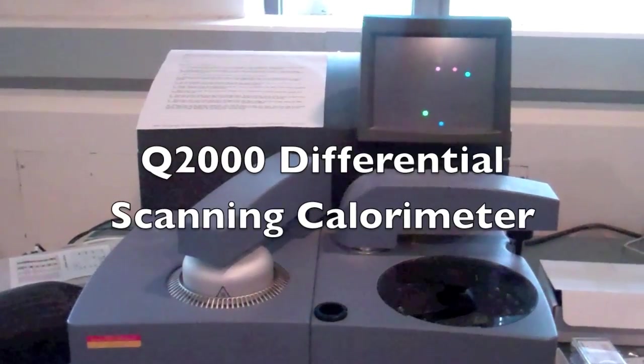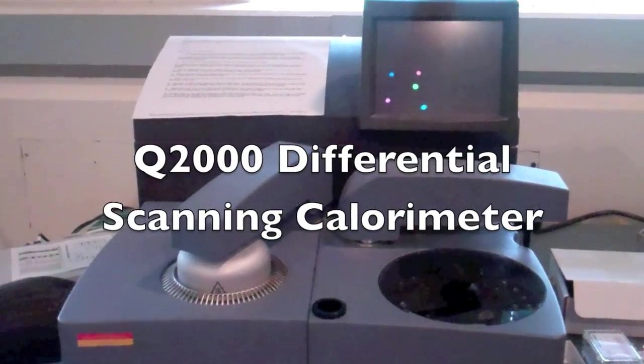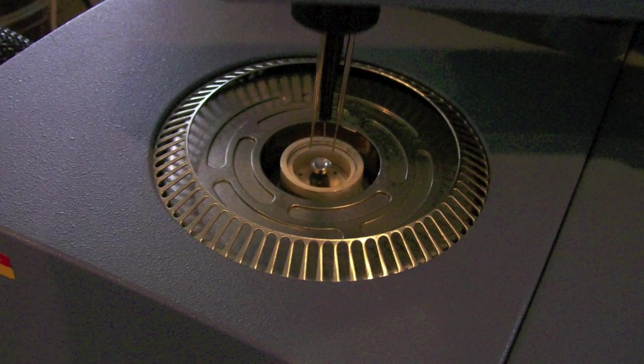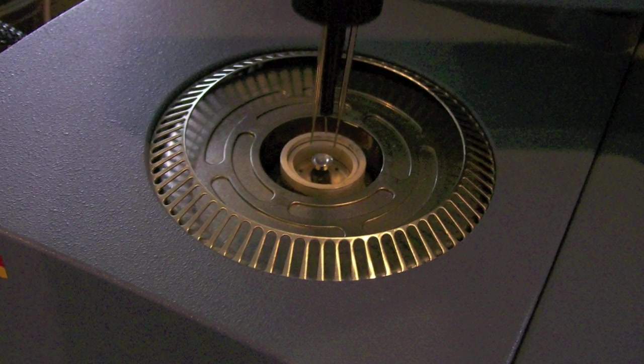The Q2000 differential scanning calorimeter is an instrument that measures the heat flow of a sample as a function of temperature. It can be used for characterizing thermal transitions for a variety of materials.